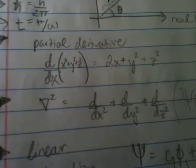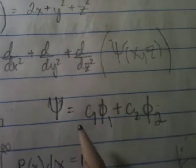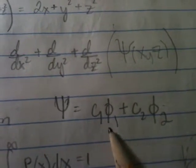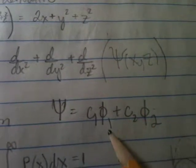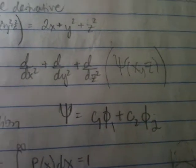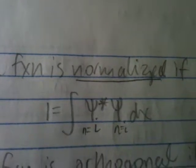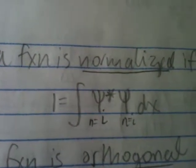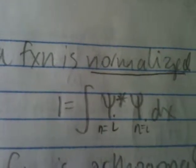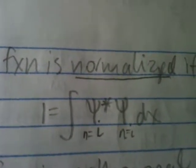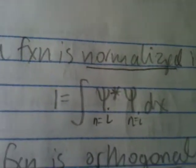Now, getting back to these linear combinations here. Linear combinations, first of all, these need to be normalized with these constants. Normalization is done like this. A function is considered normalized if the integral of the complex conjugate times the function dx is equal to 1.